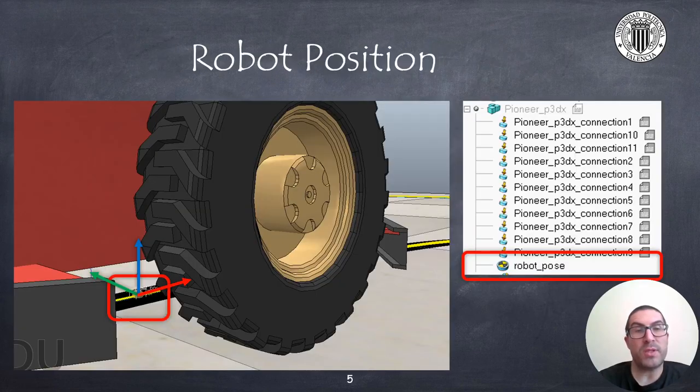We need to start by preparing the simulation scene. We need to create a dummy that will be a child of the robot Pioneer P3DX and it must be aligned with the wheel axis. Also the X, Y and Z axis of the dummy must be pointing as indicated in the figure, so the X axis is pointing forward.